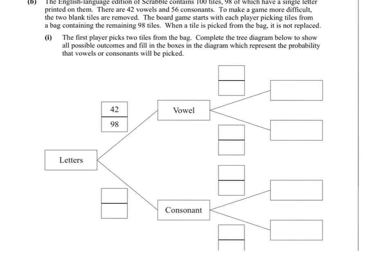Part b of question 7 is about the Scrabble board. All the letters come in a bag and within the bag there are 42 vowels and 56 consonants. So if you were to select a vowel, the chance is 42 out of 98. If you were to select a consonant, the chance is 56 out of 98. The greater probability is the consonant — you're more likely to get a consonant than a vowel.